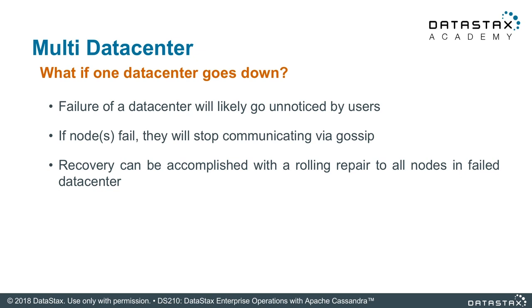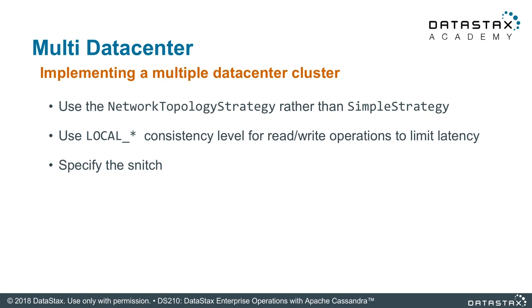If you have users using the database underneath that is replicated properly, they should never see a problem. So how do we do multi-data center? It's not really that difficult — there are just a few things to know. First, picking your topology strategy: never use simple strategy, that is what you use on your laptop or in a little test configuration. Beyond that, you should always be using network topology strategy — it works well for everything and is the one you have to use if you want replication based on a data center. You also need to consider in your application code: if you're not using local quorum or local one, you need to start thinking about that.